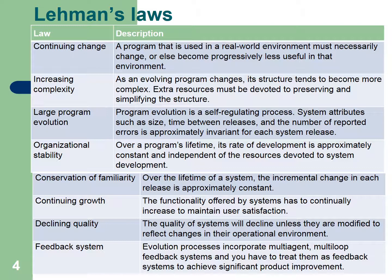Extra resources must be devoted to preserving and simplifying the structure. Large program evolution is a self-regulating process. System attributes such as size, time between releases, and number of reported errors are approximately constant for each system release. Organizational stability states that over the program lifetime, the rate of development is approximately constant and independent of the resources devoted to system development.